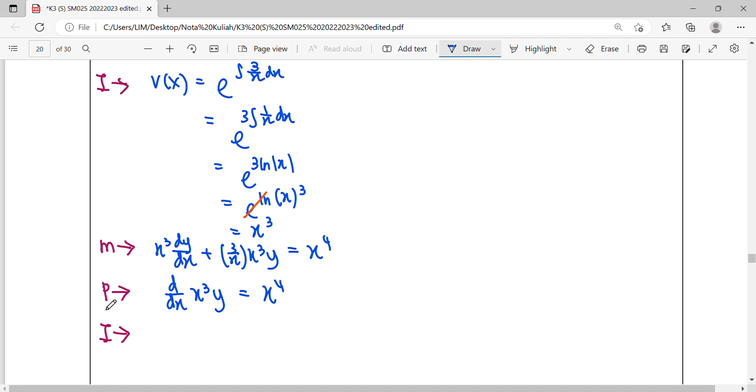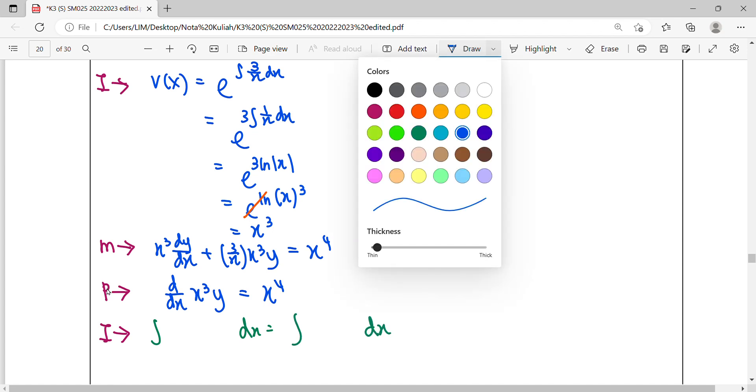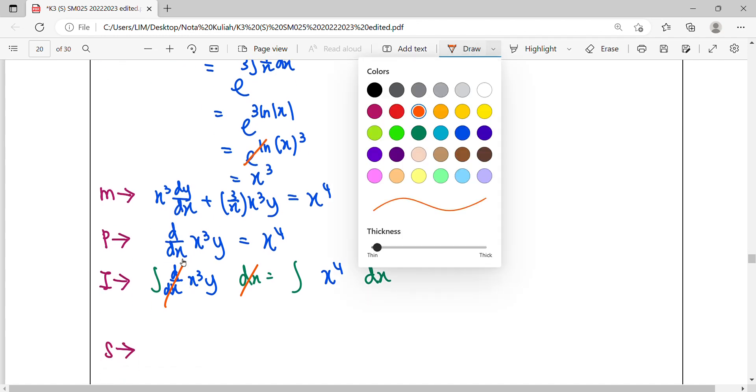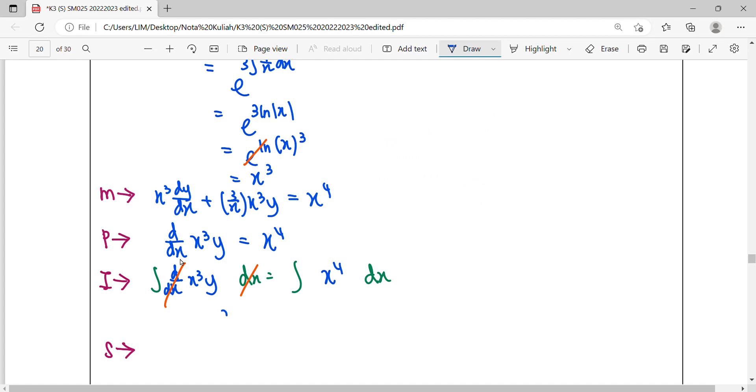Next step: integrate both sides with respect to x. For the differential x³y, notice that integration and differentiation cancel each other. So the left-hand side simplifies to just x³y.